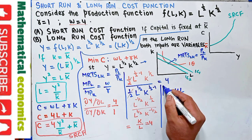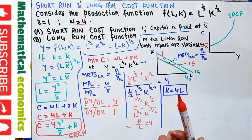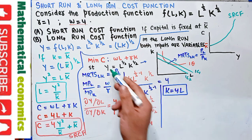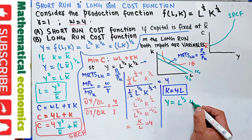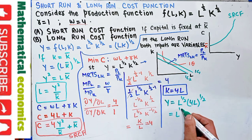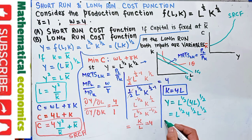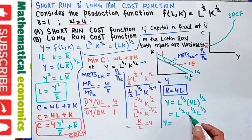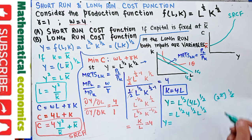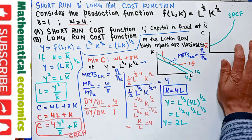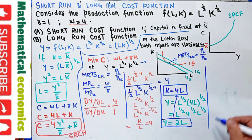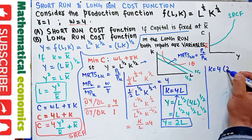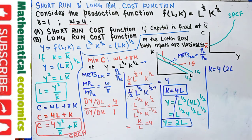Substituting K = 4L into the production isoquant: y = L^(1/2) × (4L)^(1/2) = L^(1/2) × 4^(1/2) × L^(1/2) = 2L. So y = 2L, which gives L = y/2. Then K = 4L = 4 × (y/2) = 2y.